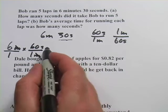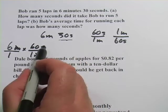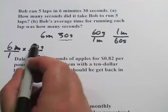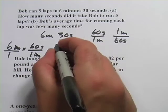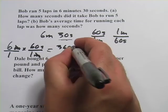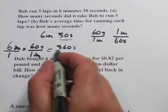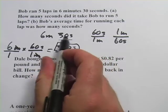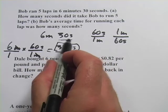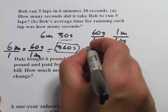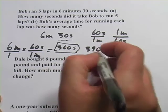And now to do the math, I simply multiply the fractions. On the top, six times 60 should be 360 seconds. And on the bottom, one times one, so it's 360 seconds. But I have to add back in this 30 seconds that I left out, so it's actually 390 seconds.